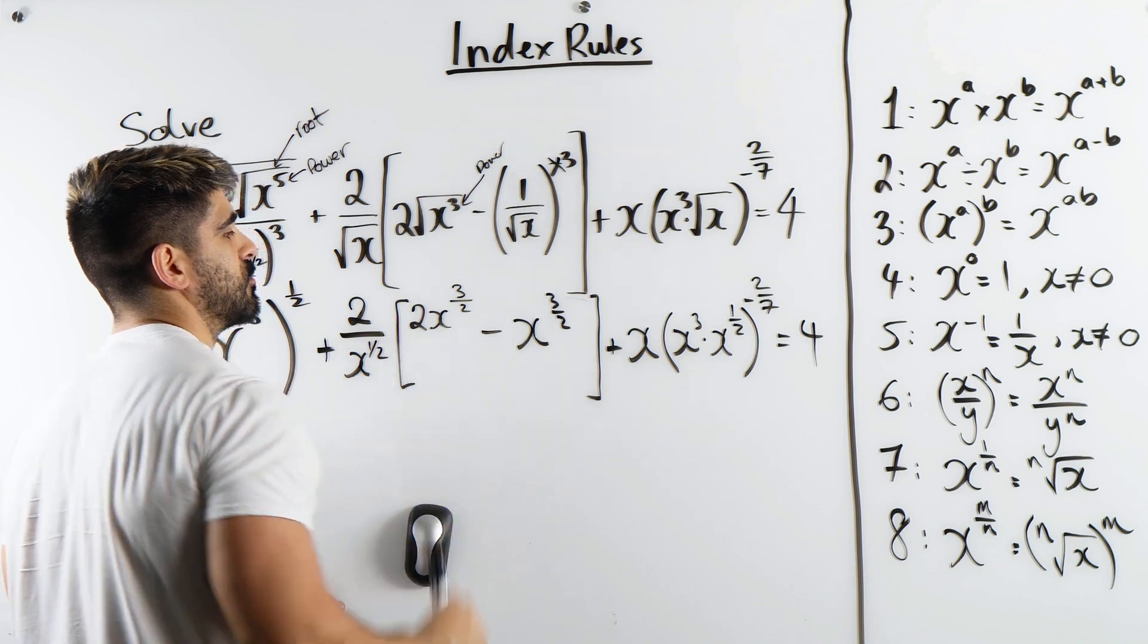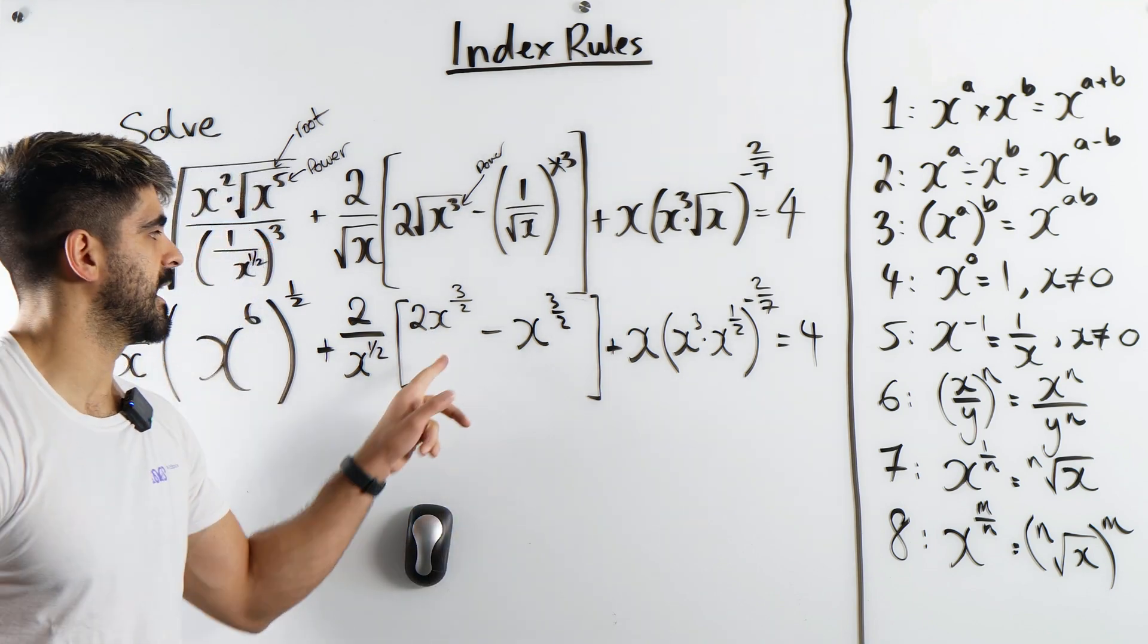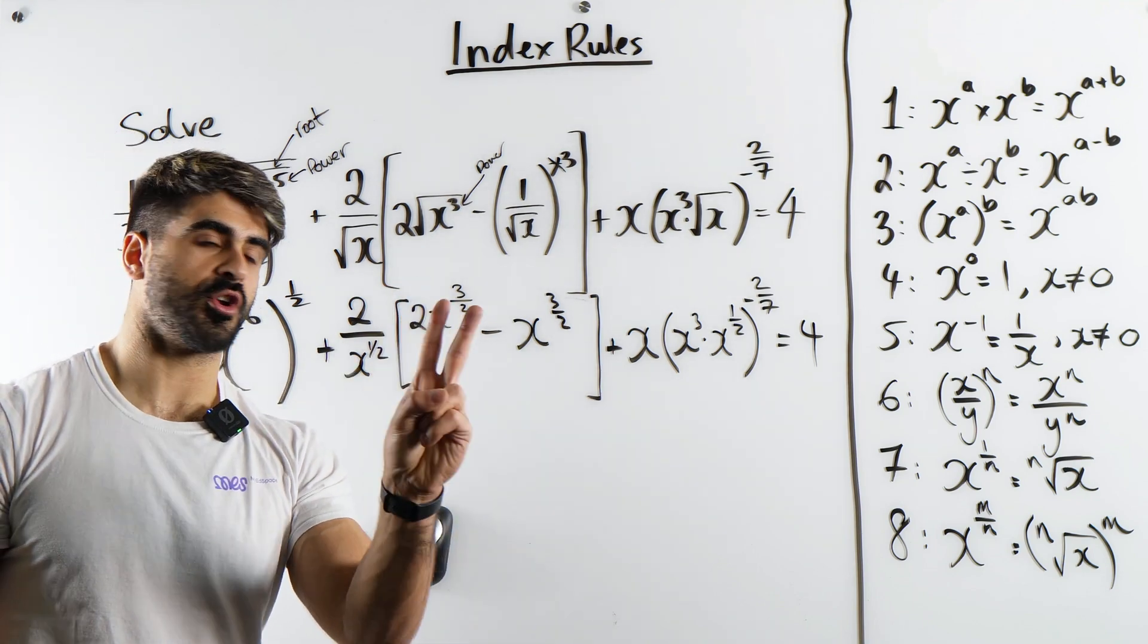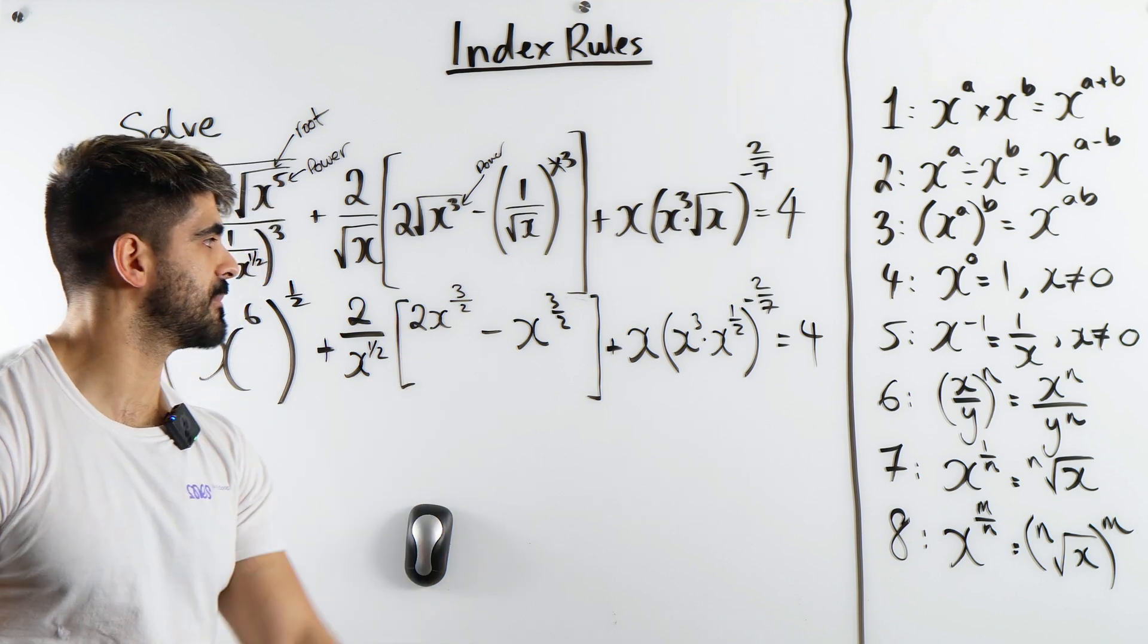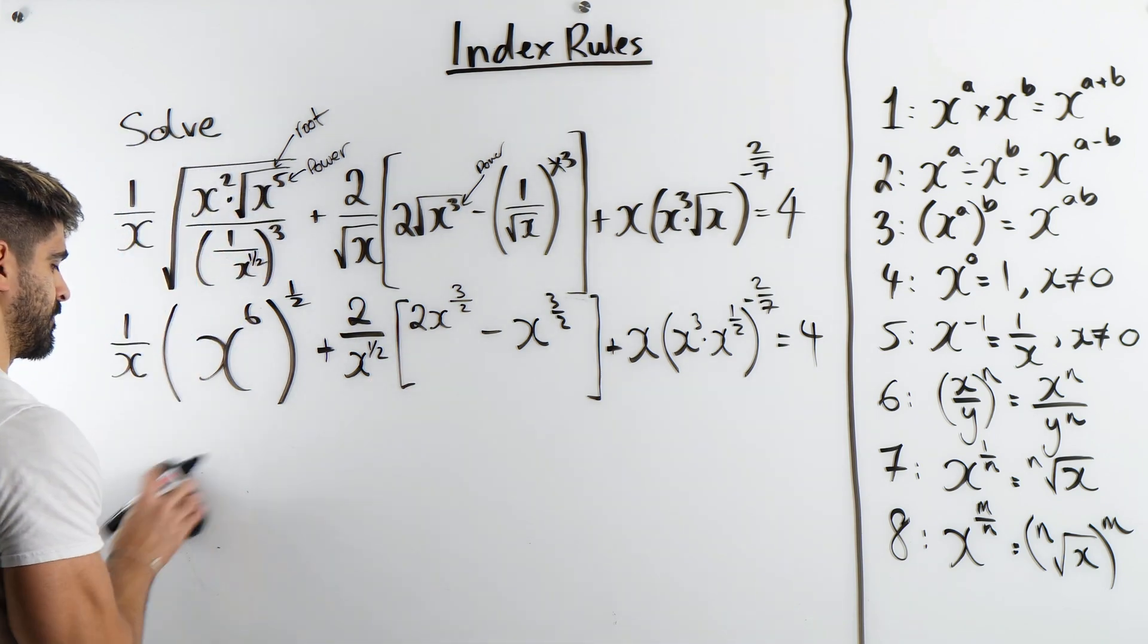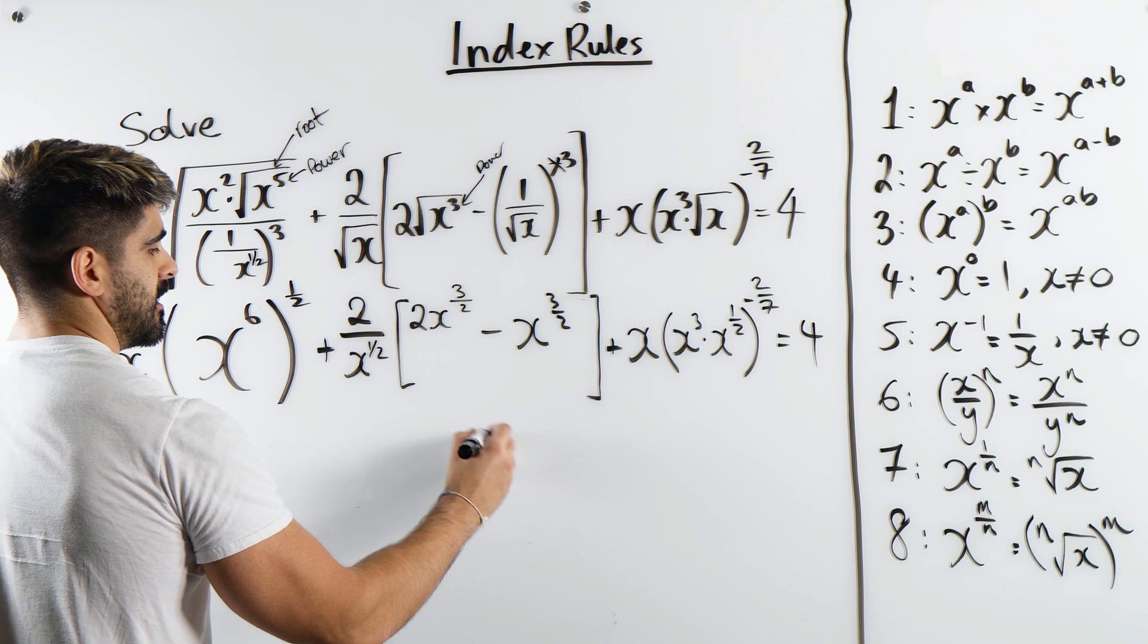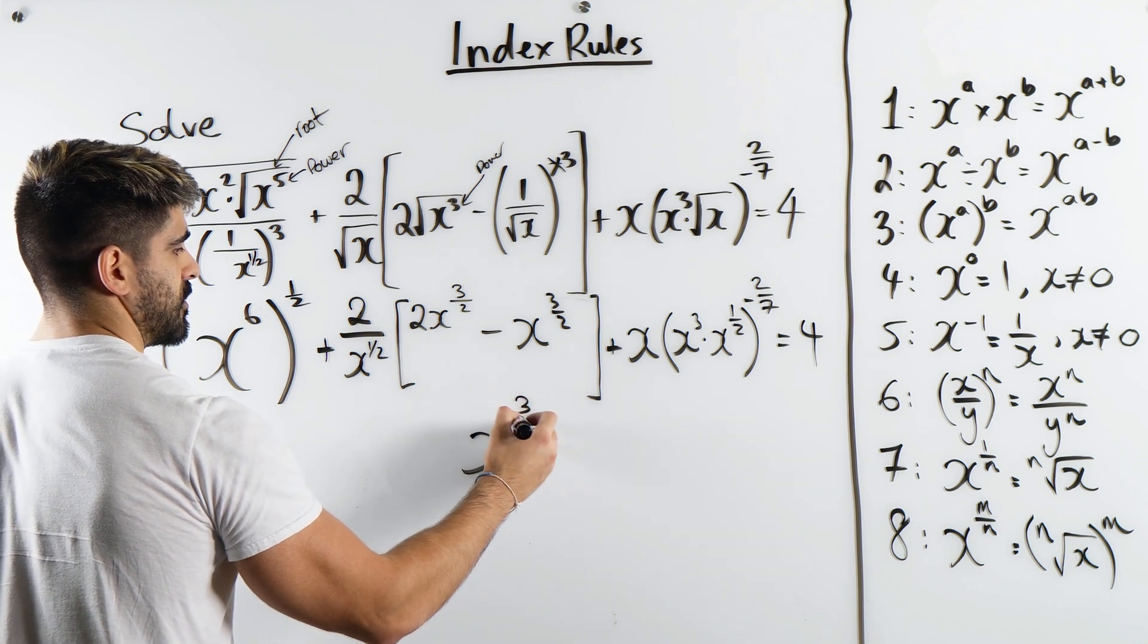Because now we can subtract these. These are like terms. Here, I have two lots of x to the 3 over 2. When I minus one of them, I just have x to the power of 3 over 2. So this here is just x to the power of 3 over 2.